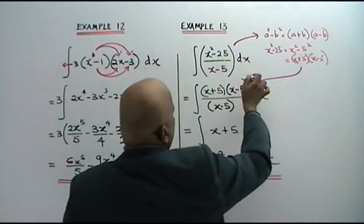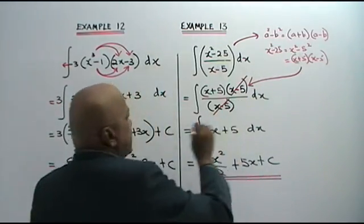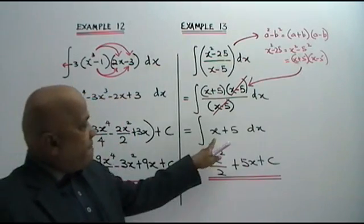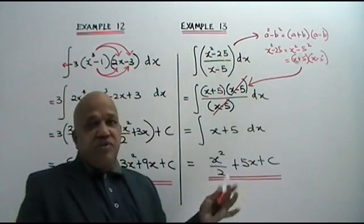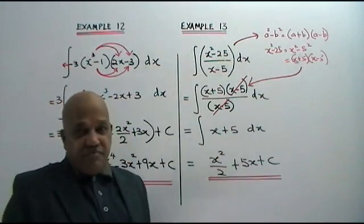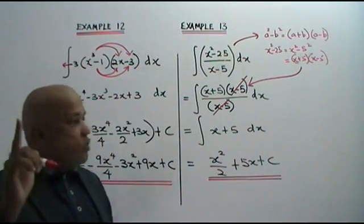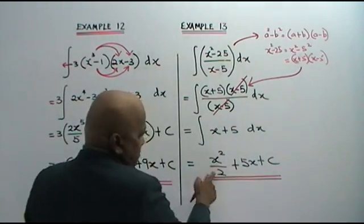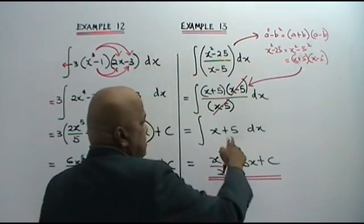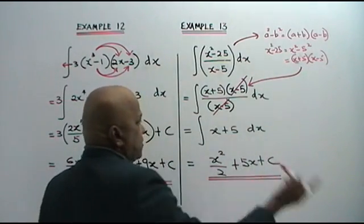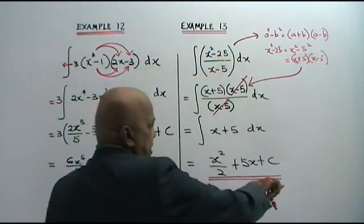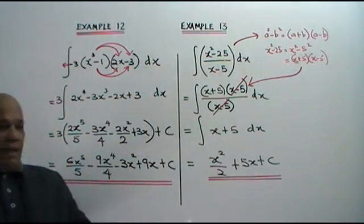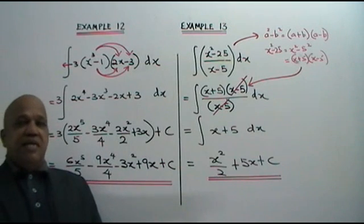So you convert the numerator to x plus 5 times x minus 5. These two brackets — the denominator x minus 5 and the factor x minus 5 — are the same, so we cancel. What have we got? x plus 5, dx. We integrate x plus 5: power 1, 1 plus 1 is 2, bring the 2 down, giving x squared over 2. Plus 5x when you integrate the constant — just add the x. Plus C. This is your answer.